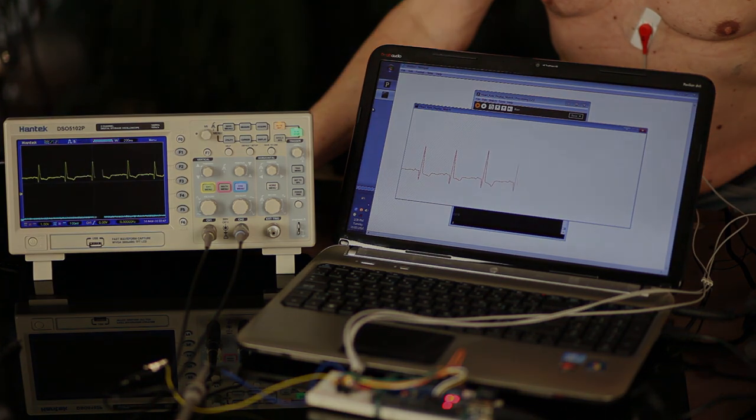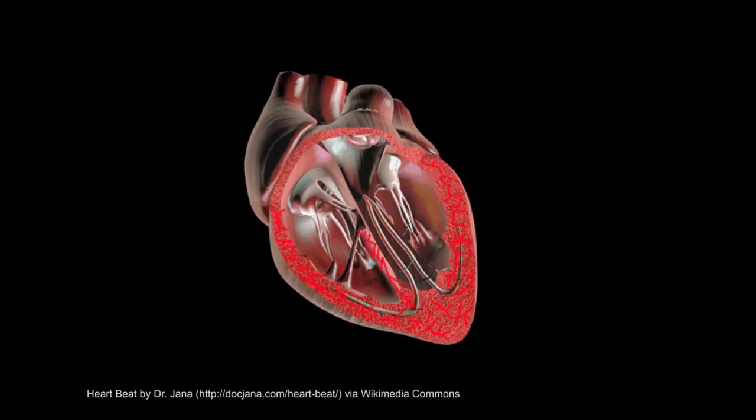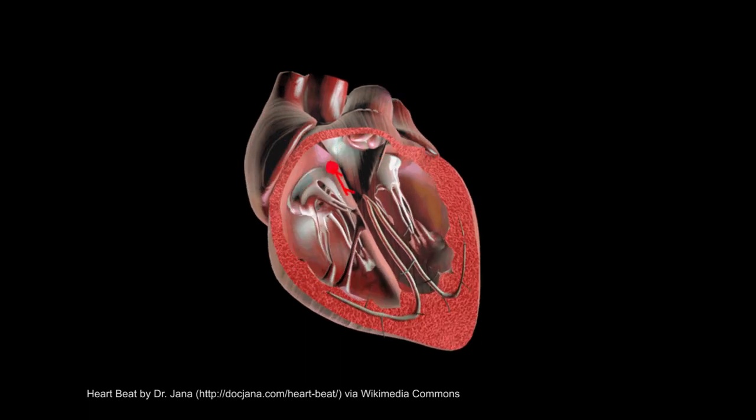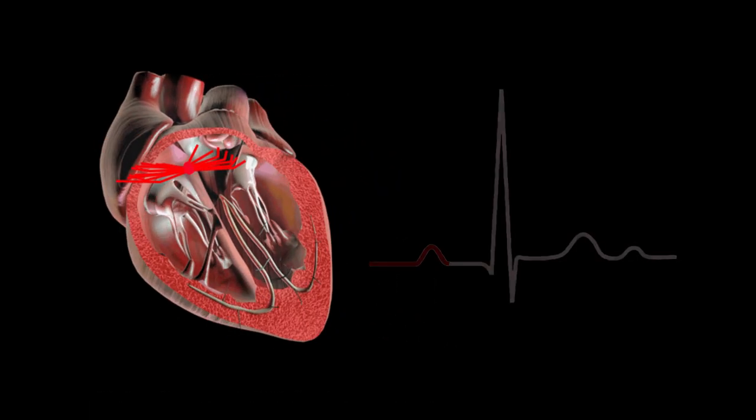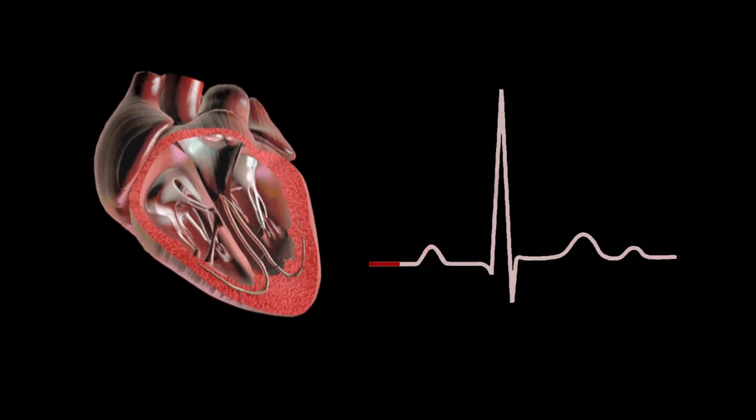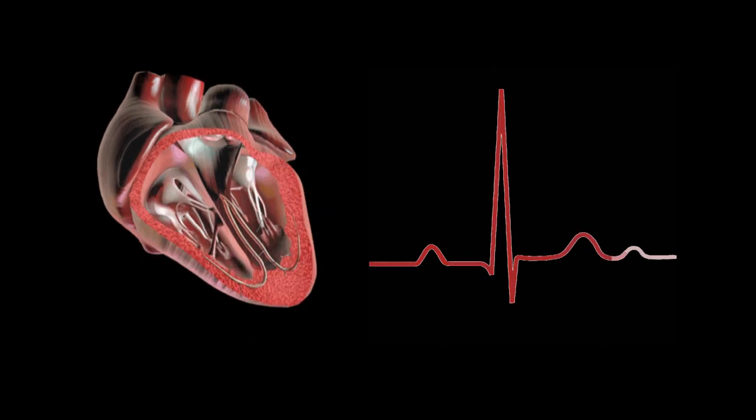The electrical system of the heart controls the generation and propagation of electrical signals through the heart muscle, causing it to periodically contract and relax and to pump blood.